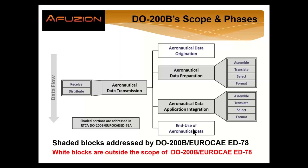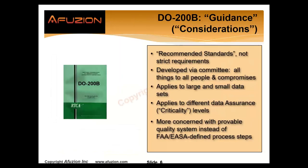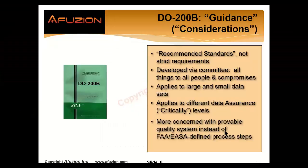Remember, DO200 is guidance — recommended standards, not strict requirements. There's a little subjectivity that we'll try to reduce within our training. DO200 is developed by committee, which means it's all things to all people. It applies to large and small data sets, and to different data assurance levels. We have different criticality levels associated with data — three assurance levels, different criticality.